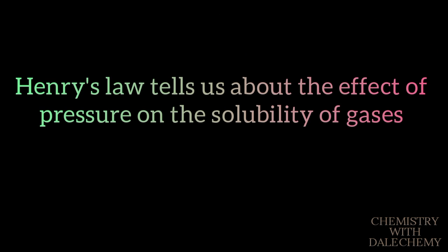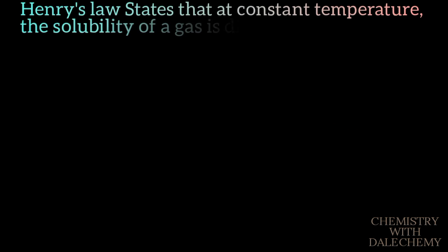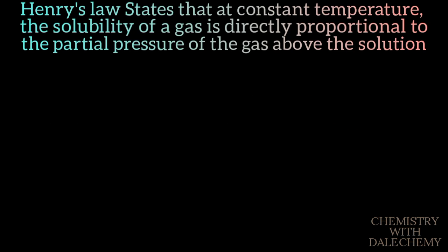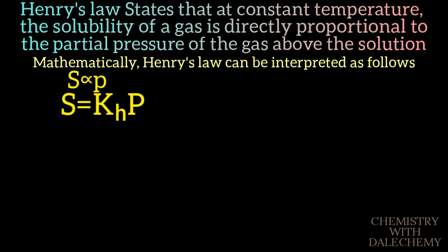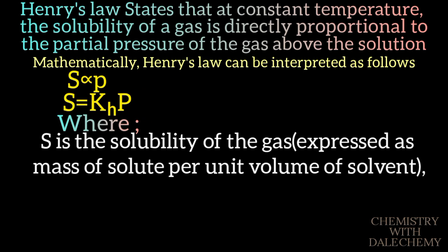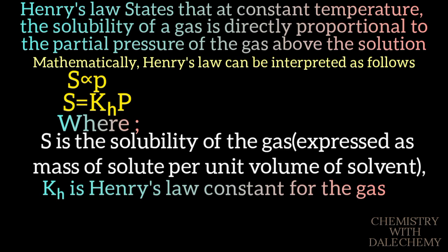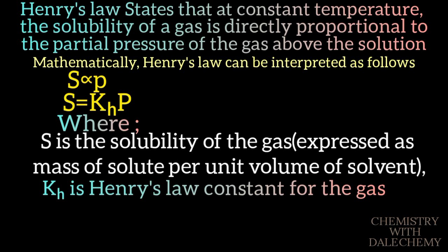Henry's law tells us about the effect of pressure on the solubility of gases. According to Henry's law, the solubility of a gas is directly proportional to the partial pressure of the gas above the solution at constant temperature. Mathematically, S = K_H × P, where S is the solubility of the gas expressed as mass of solute per unit volume of solvent, K_H is Henry's law constant for the gas, and P is the partial pressure of the gas.